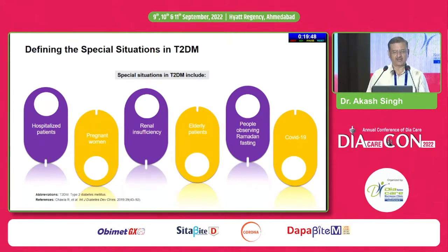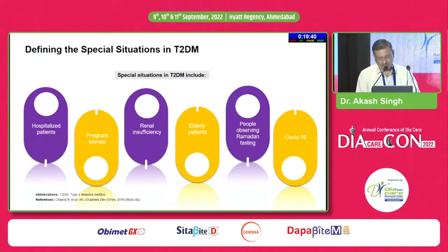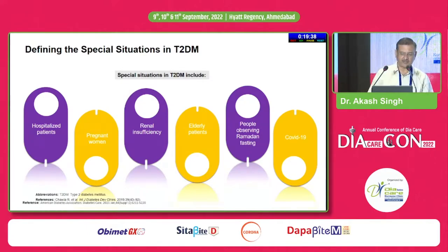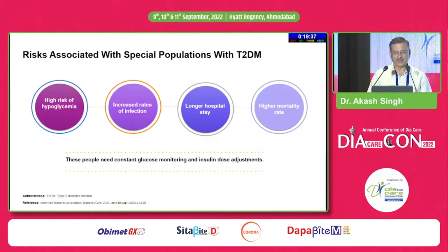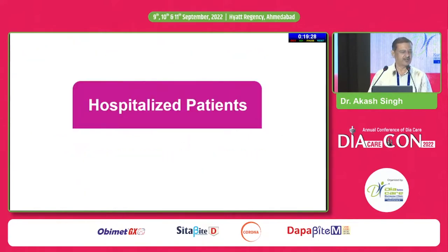Defining special situations: hospitalized patients, pregnant patients, patients with renal insufficiency, elderly patients, Ramadan-observing patients, COVID-19, and steroids. The risks associated with special populations include high risk of hypoglycemia, increased risk of infection, longer hospital stays, and higher mortality rate.